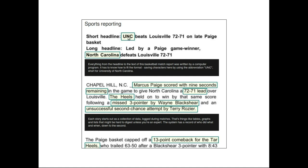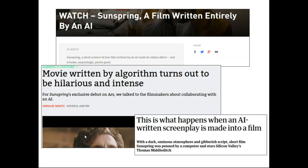The computer program was smart enough to use acronyms like UNC for University of North Carolina in a short headline, to save characters. It was smart enough to know to use the acronym in a short headline, whereas in a long headline it used the full name North Carolina. It was also able to decide the main points to include in the report.